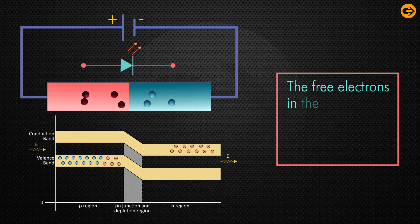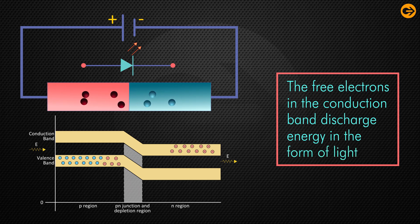The free electrons in the conduction band discharge energy in the form of light before they recombine with the holes in the valence band.